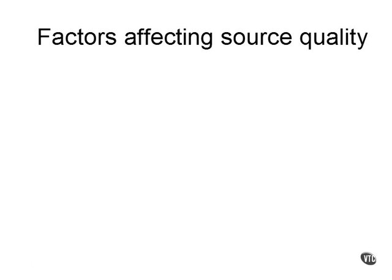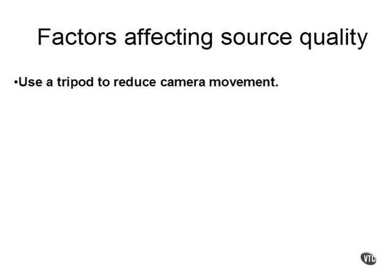First, use a tripod to reduce camera movement. If your camera is not steady, most of the image will move, causing a high percentage of pixels in the video to change from frame to frame. A steady camera reduces the number of pixels that change, giving you much better quality at higher compression rates and also providing you with lower data rates.